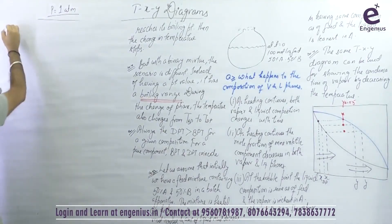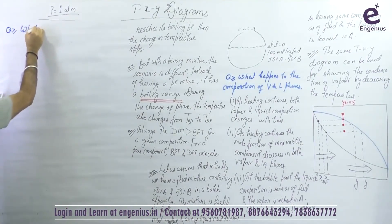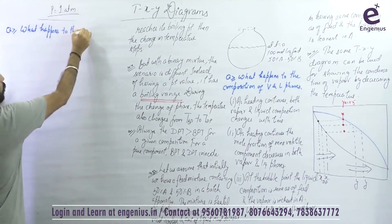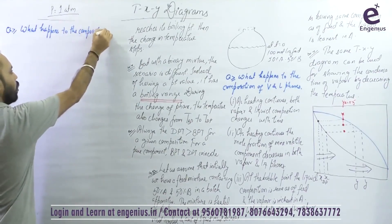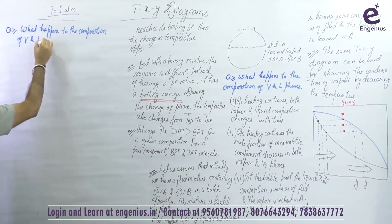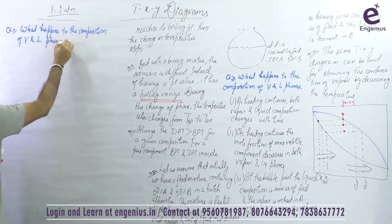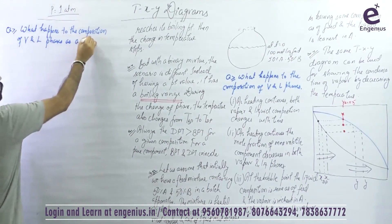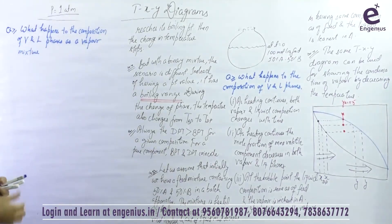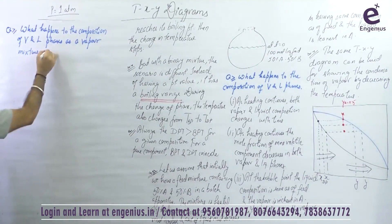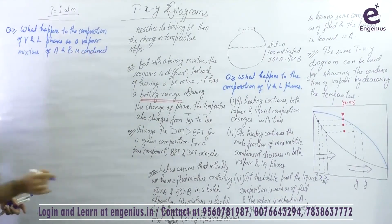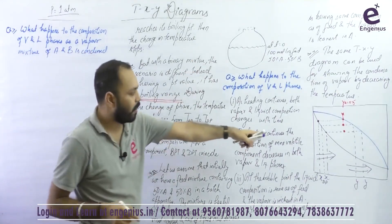What happens to the composition — meaning the composition of the more volatile component in the vapor and liquid phases — as a vapor mixture of A and B is condensed? Please give your answer by interpreting this diagram. What is happening?